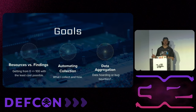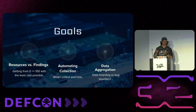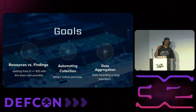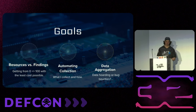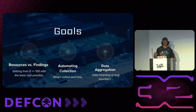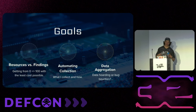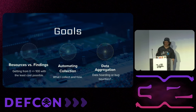There are three main goals for the talk. The first is resources versus findings — in bug bounty automation you can get a lot of data really fast and have zero findings, which means zero dollars. We'll talk about getting from zero to 100 with as little cost as possible. The second part is automating collection. The last portion is data engineering for bug bounty automation, to encourage people to move away from flat text files.